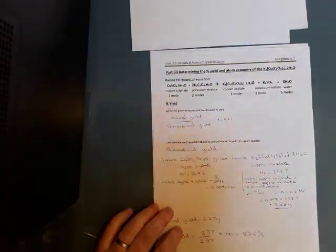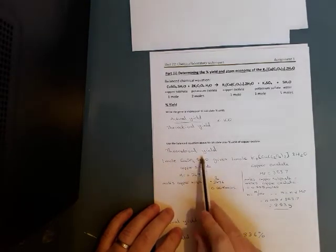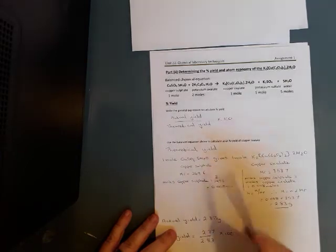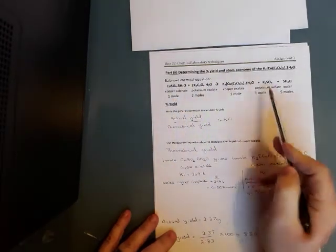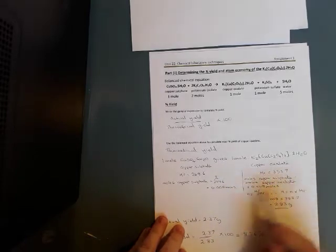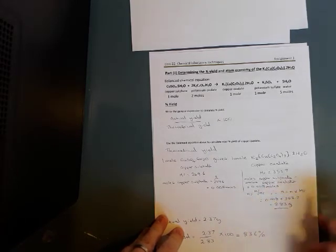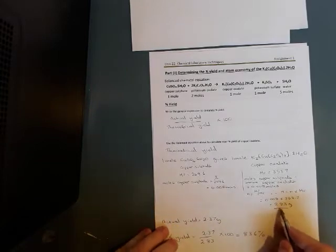To work out the theoretical yield. First thing we need to do is we know from this reaction that one mole of copper sulfate gives us one mole of copper oxalate. We know the MR of our copper sulfate pentahydrate 249.6. We use two grams in the method. So moles equals M over MR. So 2 divided by 249.6 gives us 0.008 moles. As we said previously, one mole to one mole. So we've got one to one molar ratio. So therefore moles of copper sulfate equals moles of copper oxalate, which is 0.008 moles. If we use N equals M over MR, rearrange that. Therefore, M equals N times MR. So it's 0.008 times by 353.7. And 353.7 is the MR of copper oxalate. That should give us 2.83 grams.